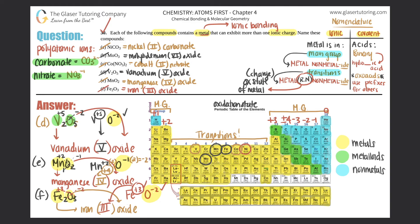And that's number 30 done. If you need more practice with Roman numerals and transition metals, go back to number 29 — it's a very similar problem. The more practice you do, the better you'll get. This type of course is all about practice problems, so try to do as many as you can.